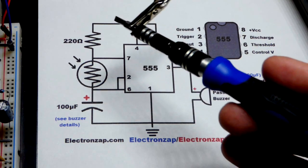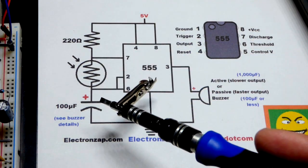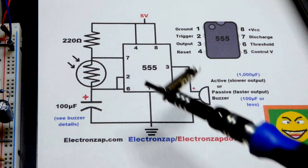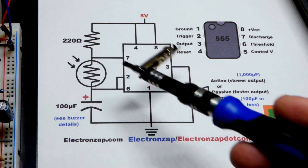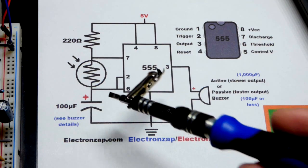So this is astable mode here, which means the capacitor keeps charging through these two resistors and discharging to set the output. While the capacitor is charging, the output is high. While it's discharging, the output is low.